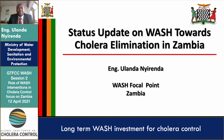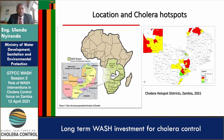Greetings from Zambia. The slide is showing us the location of Zambia on the left — Zambia is in the southern part of Africa, surrounded by eight neighbors. On the right side, the red is showing the cholera hotspots of high priority, and also the yellow and the green. Most of the hotspots are in the central part of Zambia going to the south and also the extreme north.